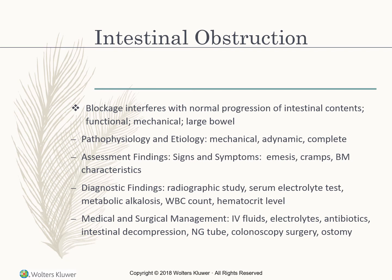The pathophysiology includes mechanical full or partial blockage, twisting of the intestines, or intussusception — where one part of the intestine goes into another. Assessment findings include emesis, cramping, and abnormal stools. Diagnostic findings include radiographic study, serum electrolyte tests, metabolic alkalosis, WBC count, and hematocrit. Management includes IV fluids, electrolytes, antibiotics, intestinal decompression via NG tube, colonoscopy, possible surgery through colonoscopy, and possibly an ostomy.